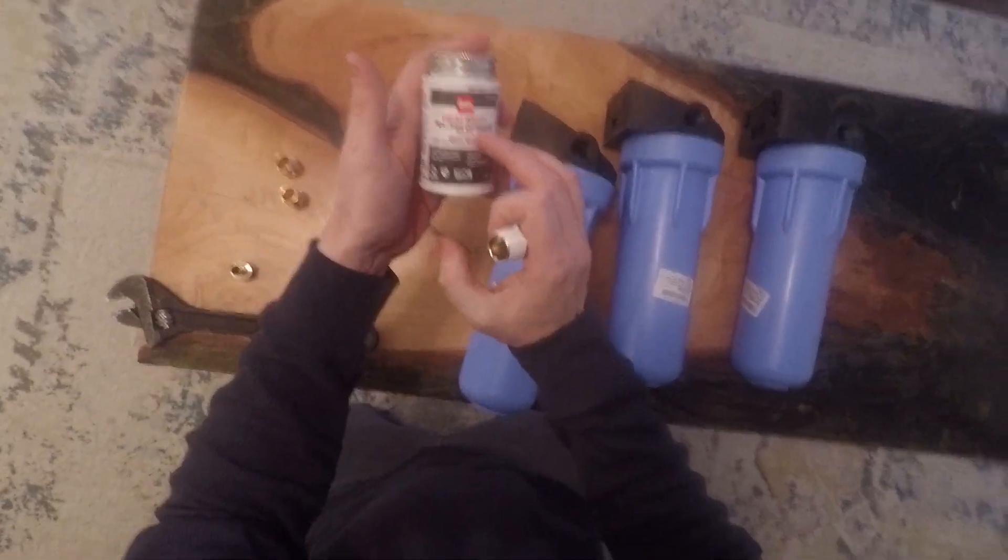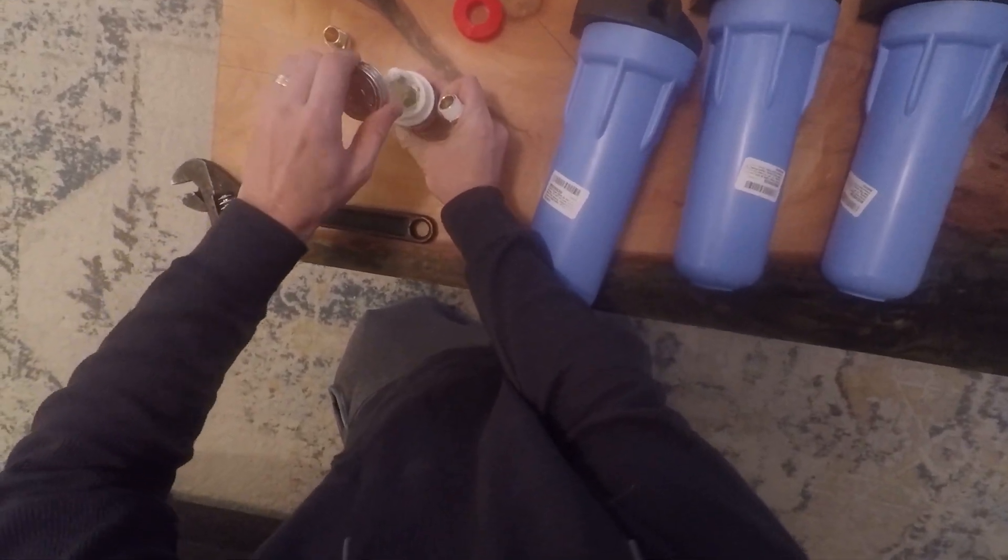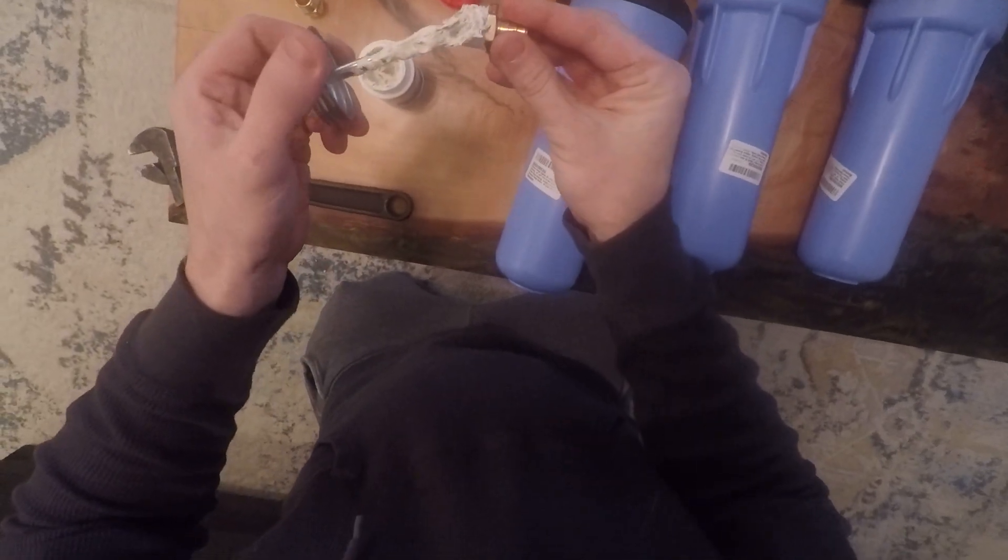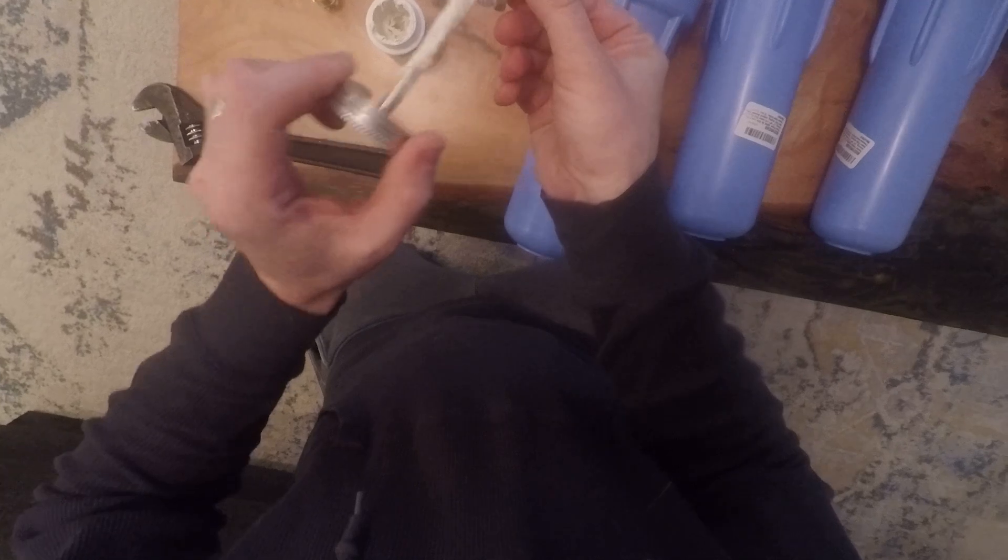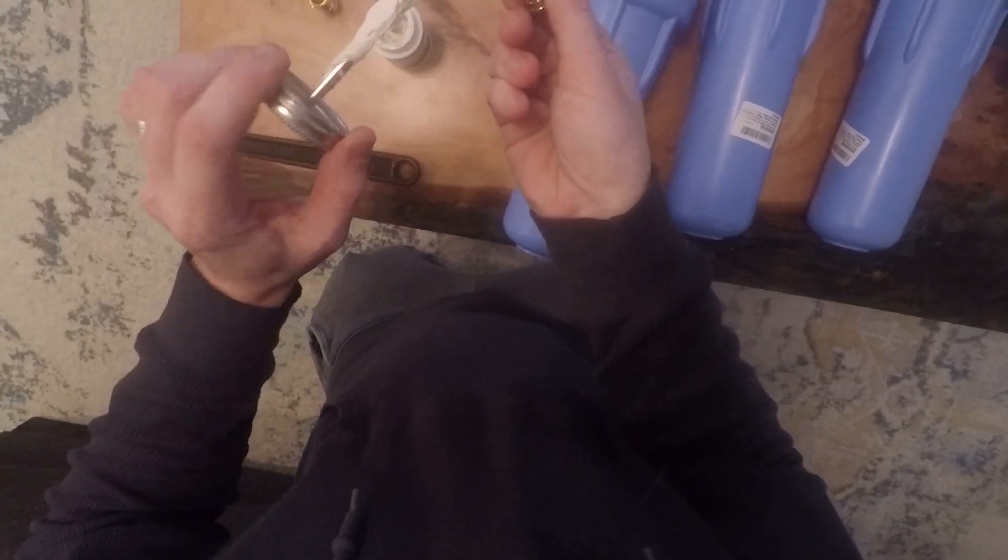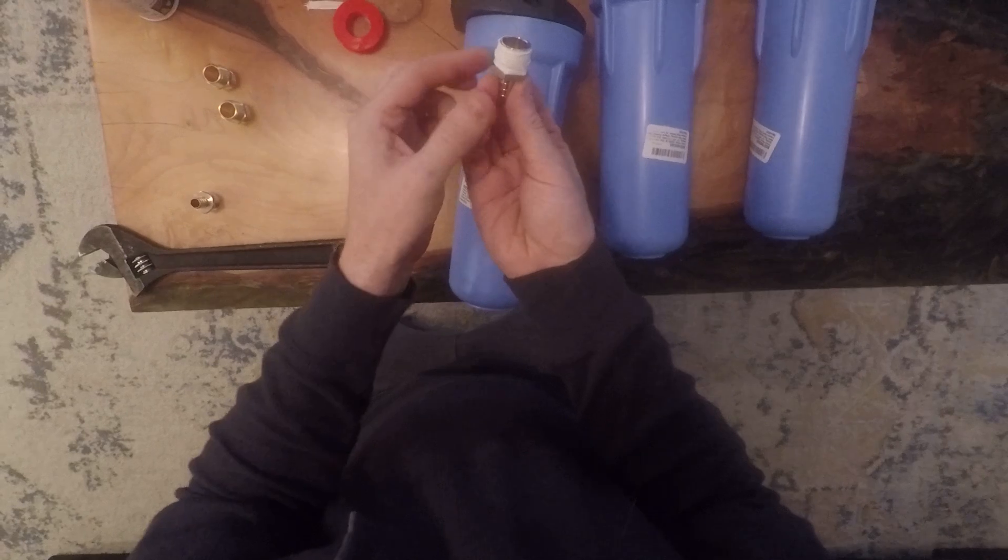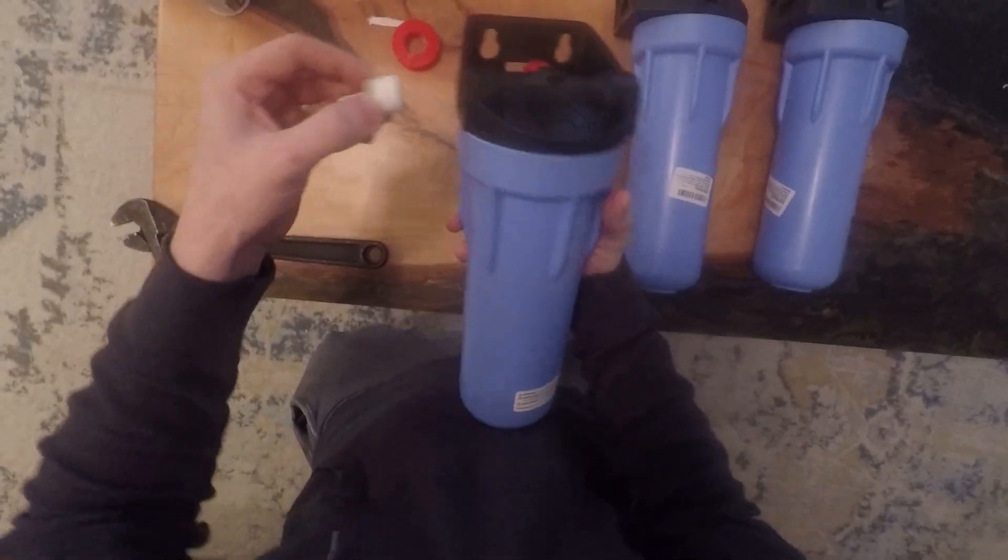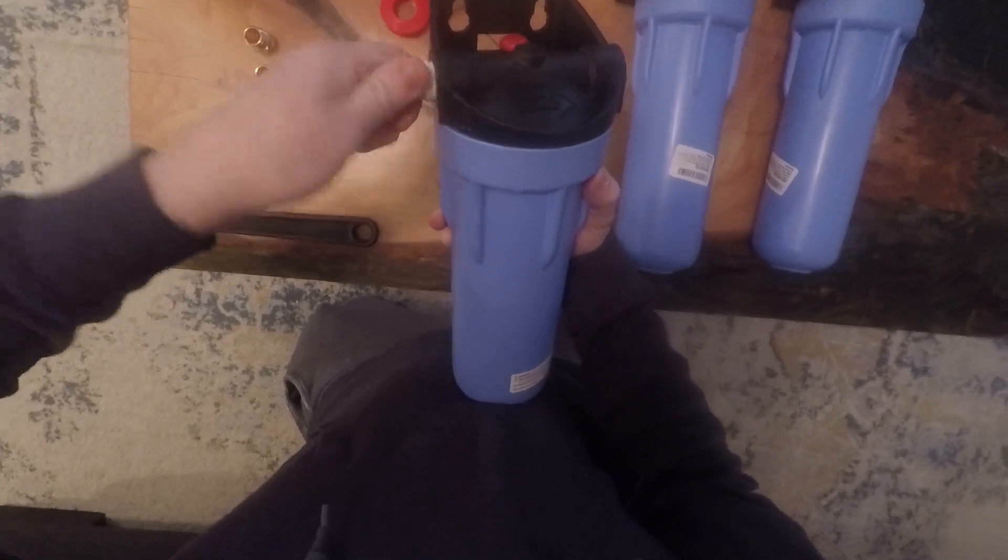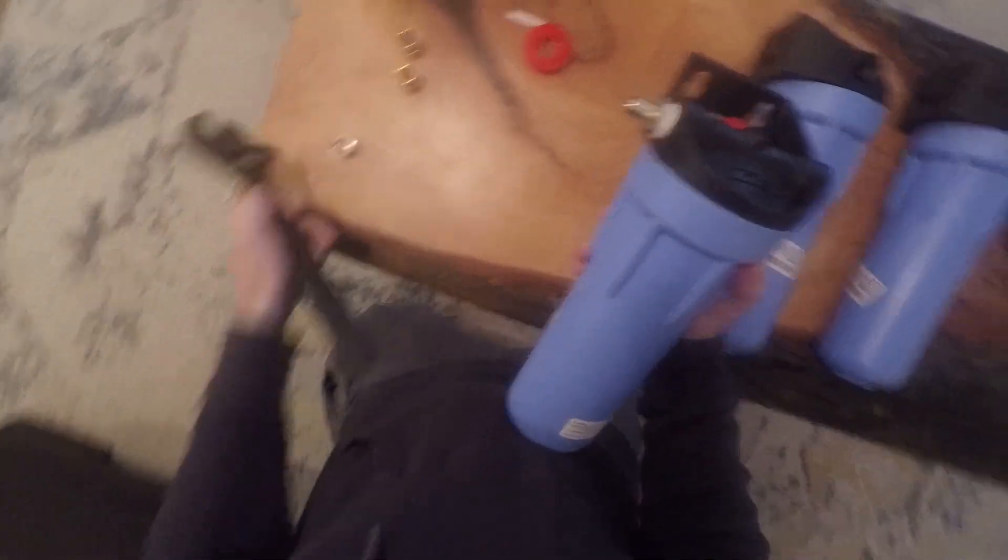And now I have the great white pipe joint compound with PTFE. I'm going to put some of that as well. Now I'm going to come on the left side of the filter. That's my inlet. I'm going to put that on.